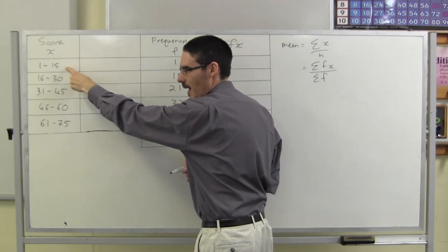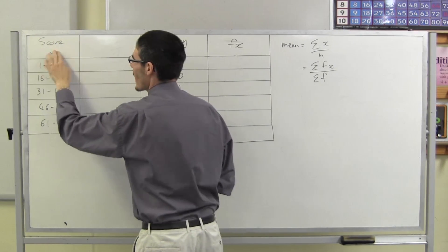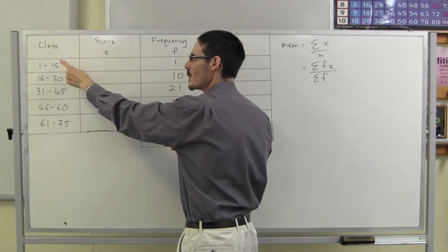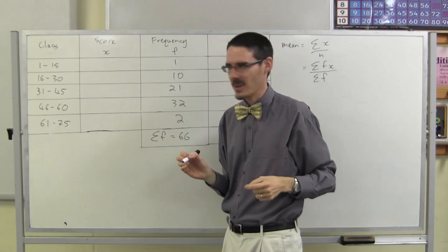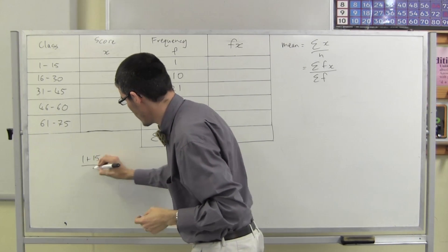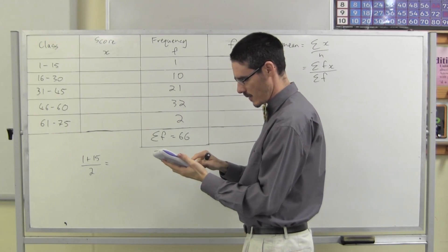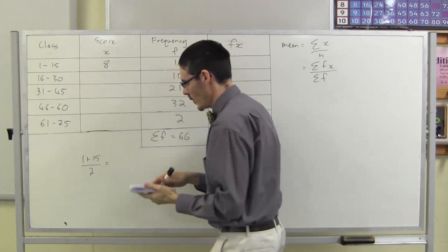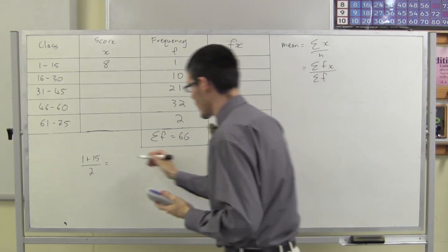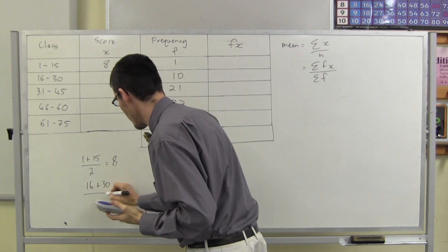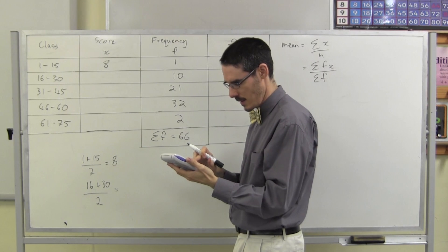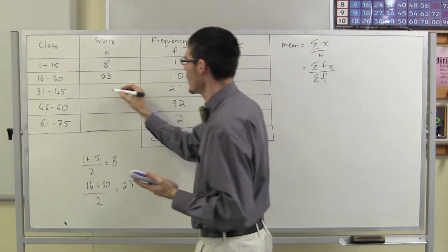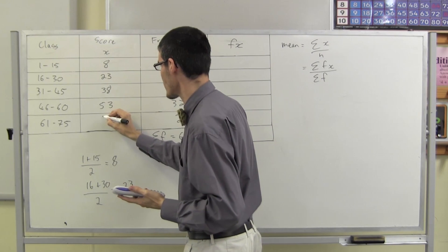I'm going to have to represent this class by a single score. My x value is going to be the number in the middle of that class. So let's go 1 plus 15 divided by 2 — that gives 16 on 2, which is 8. The next class, 16 to 30: 16 plus 30 divided by 2 is 46 divided by 2, which is 23. From there you should be able to see the pattern — that's going to be 38, then 53, then 68.